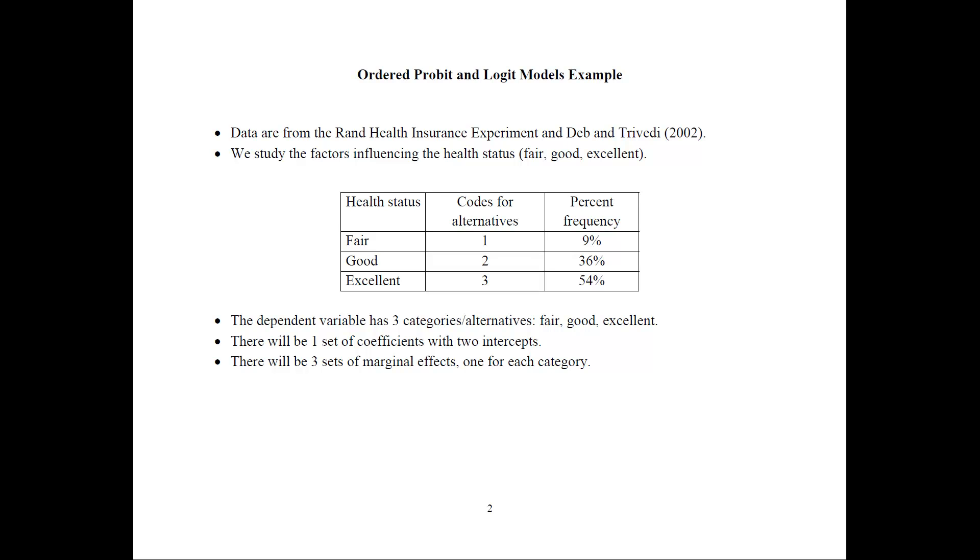The way to summarize these is with percent frequency because if you take a mean of these, that wouldn't mean anything. So 9% of the people have fair status, 36% have good status, and 54% have excellent health status in the sample.